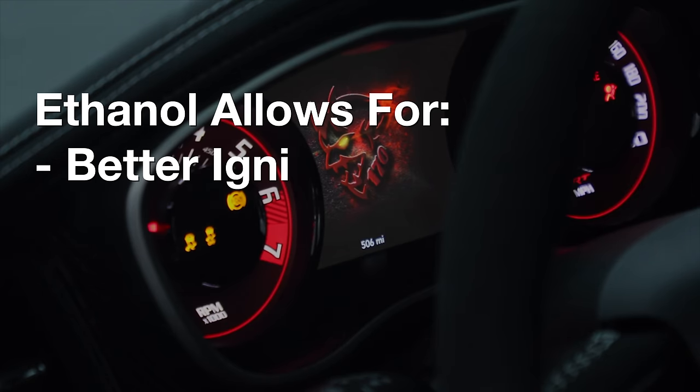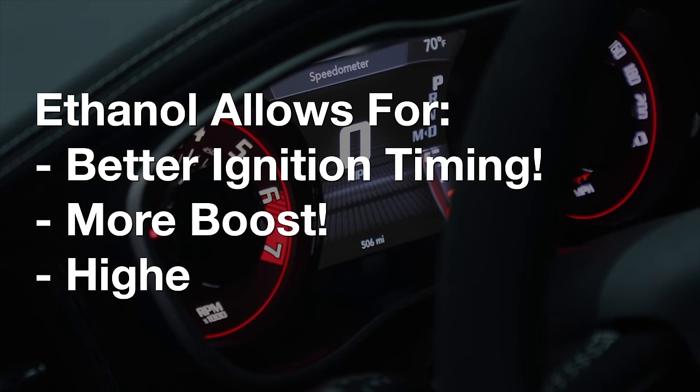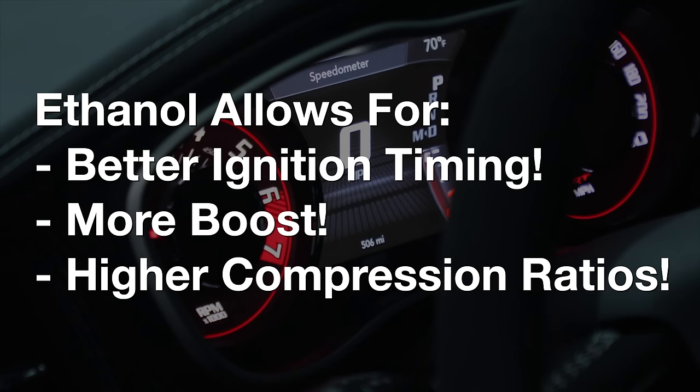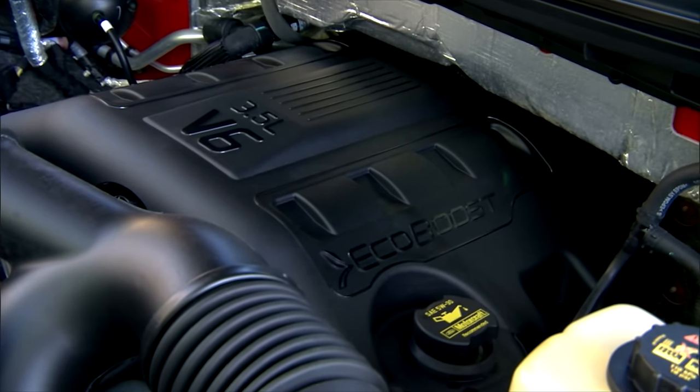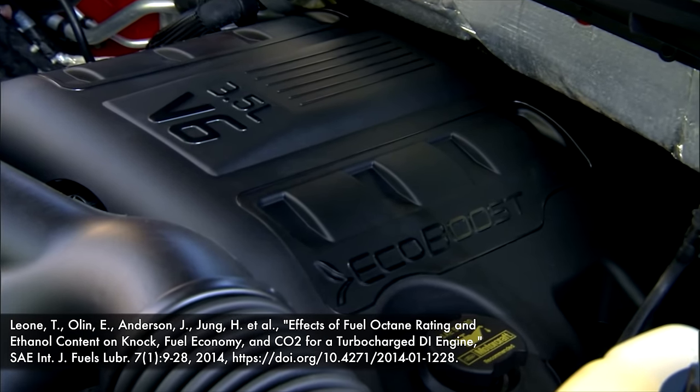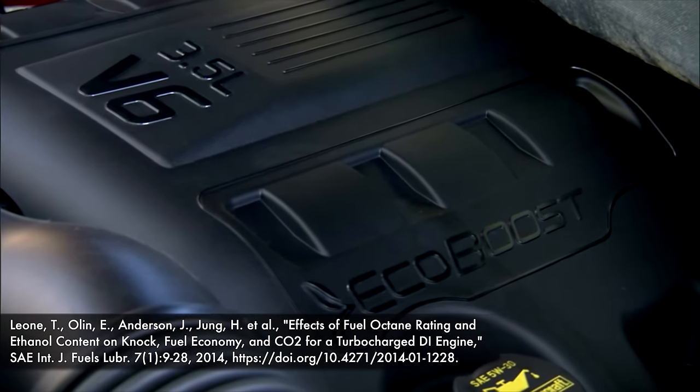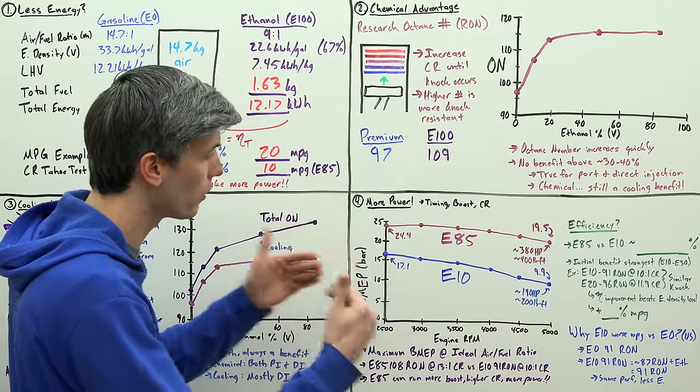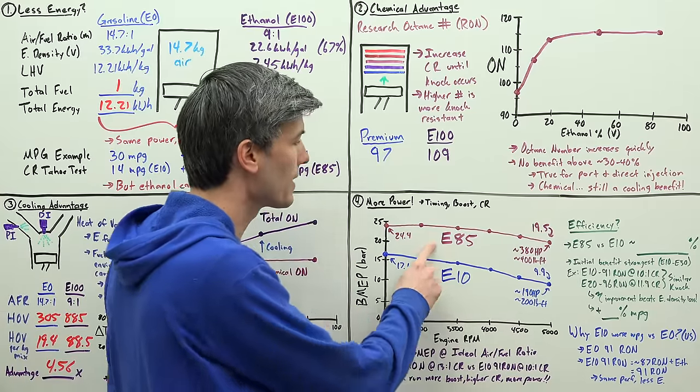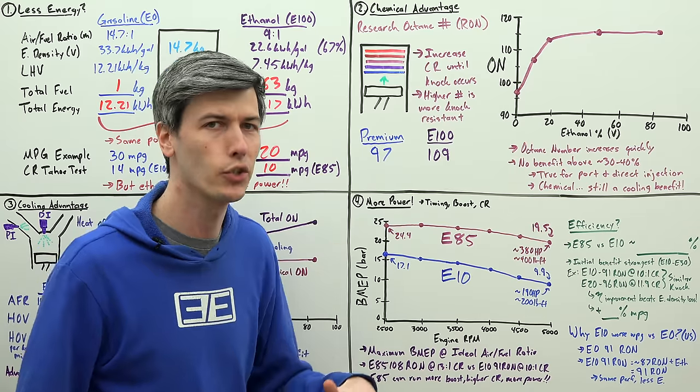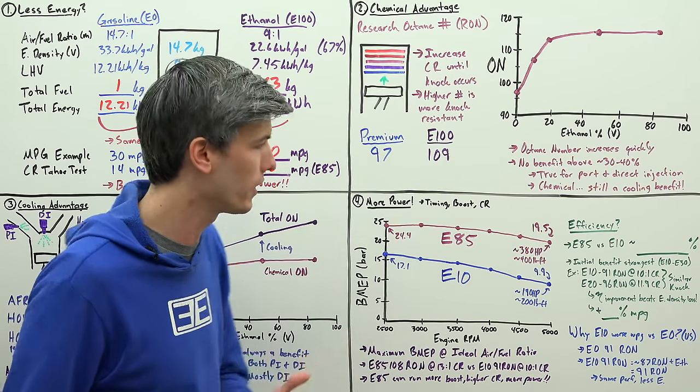So because ethanol can provide a much higher octane number, it means you have more flexibility with your ignition timing. It means you can run more boost, and it means you can run higher compression ratios. All of this meaning you can make more power. So I found a really cool study performed by Ford where they took a 3.5 liter direct injection turbocharged engine out of an F-150 and they put various fuels in it. So two of those fuels being E10 as well as E85.